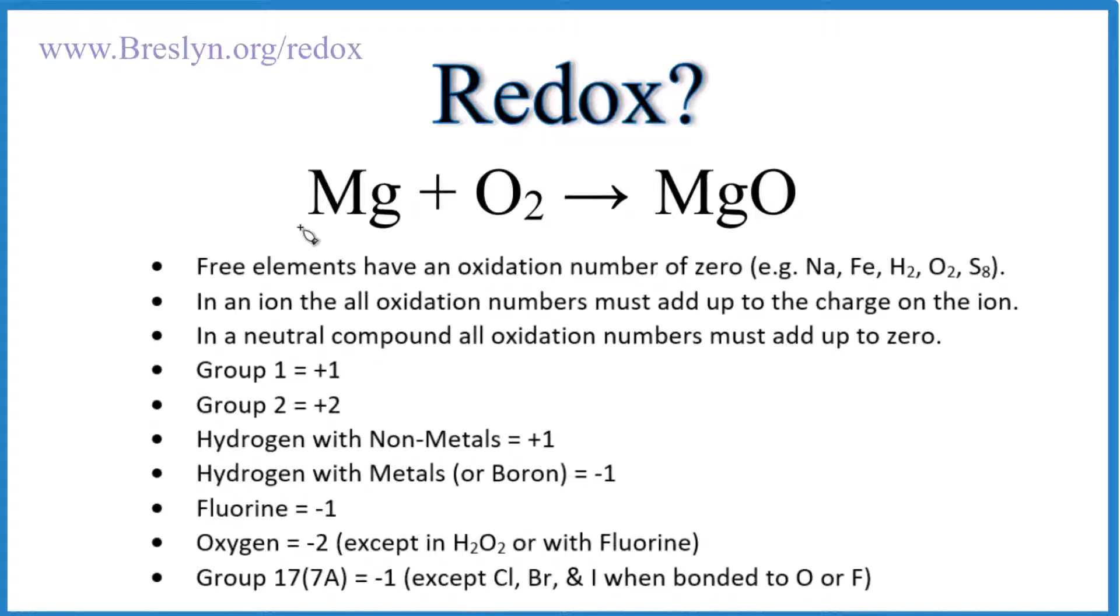If you need to figure out whether Mg plus O2 yields MgO is a redox reaction or not, here's how you do it. We need to use these rules here to assign oxidation numbers to each element, and we can use that to figure out whether electrons are lost or gained. So let's give it a try.